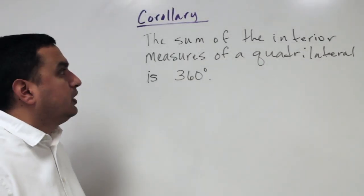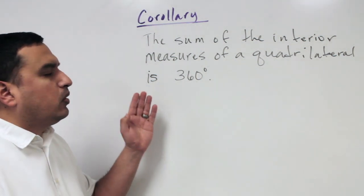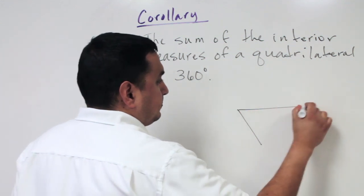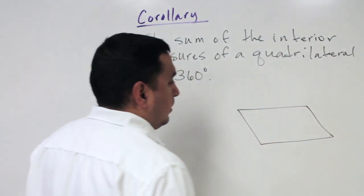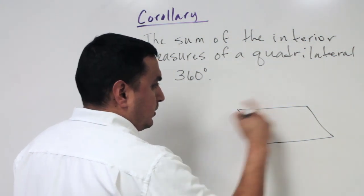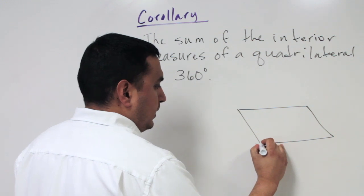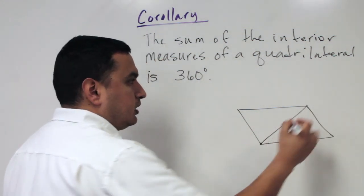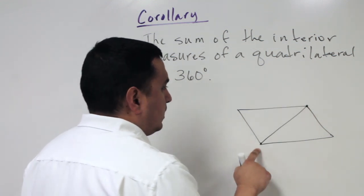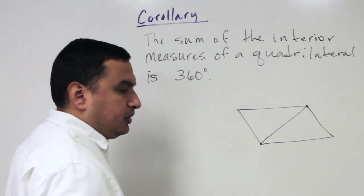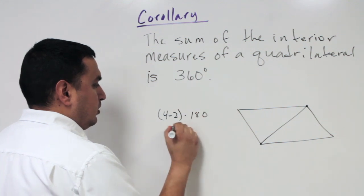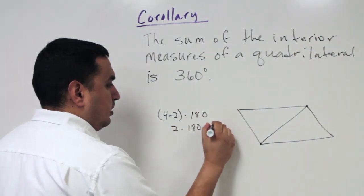A corollary states that the sum of the interior angles of a quadrilateral is 360°. Any 4-sided shape's angles sum to 360. If you take a vertex and connect it to the non-adjacent vertex, you get two triangles — 180 plus 180 equals 360. Using the formula: (4−2) times 180 equals 2 times 180, which is 360.